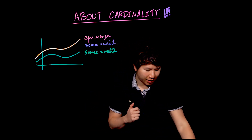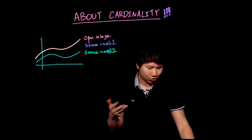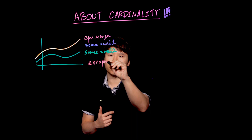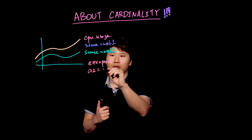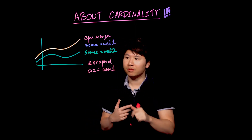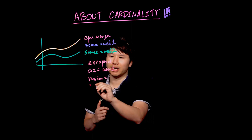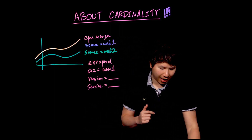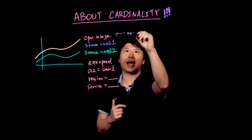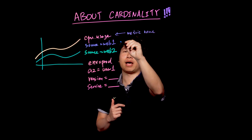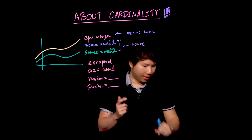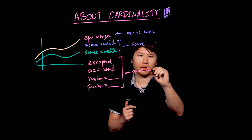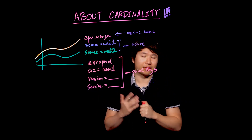With many time series databases, you can actually have additional dimensions that you attach to any time series that you send. In the case of Wavefront, you could be including things like perhaps the environment of the machine — whether it's in production — maybe if you're running in AWS, you include the availability zone that it is running in, or if it's a particular service, you could have the version number of the service, and it would be helpful to identify the name of the service itself. In Wavefront, these have particular names: this would be the metric name, we have something called the source of the metric, and then we have all these dimensions that we attach to them, which we call point tags.